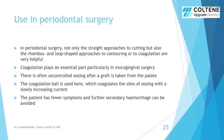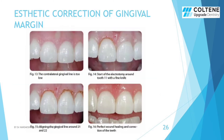Coagulation plays an essential role in muco-gingival surgery. There is often uncontrolled oozing after a graft is taken from the palate. The coagulation bowl is used here to stop the oozing. The patient has fewer symptoms and further secondary hemorrhage can also be avoided. This slide shows a series of images showing how electrosurgery is used for correction of the gingival margin.